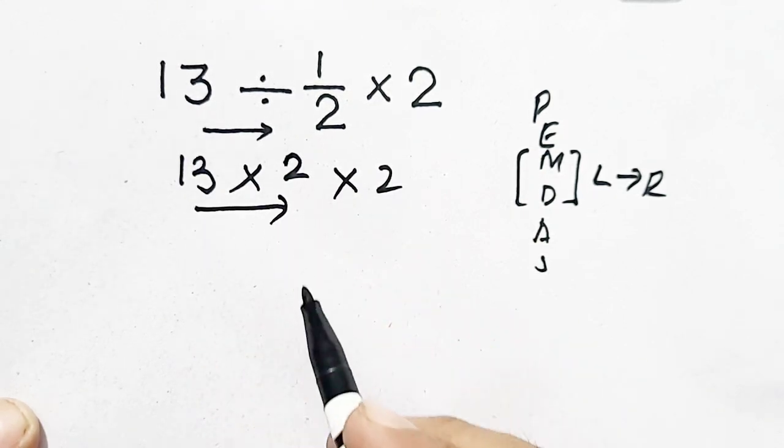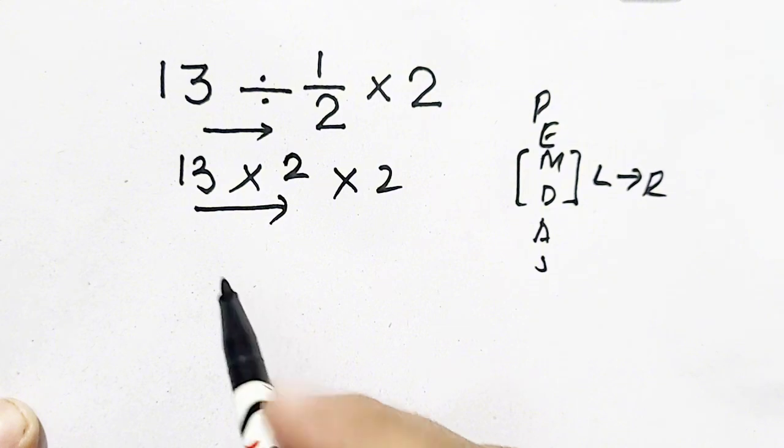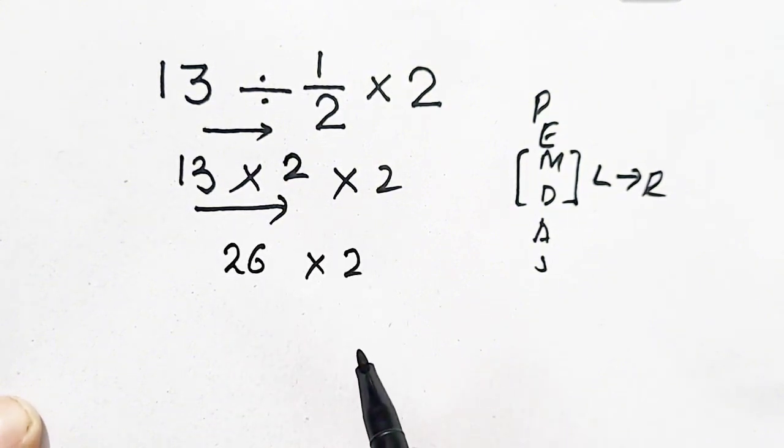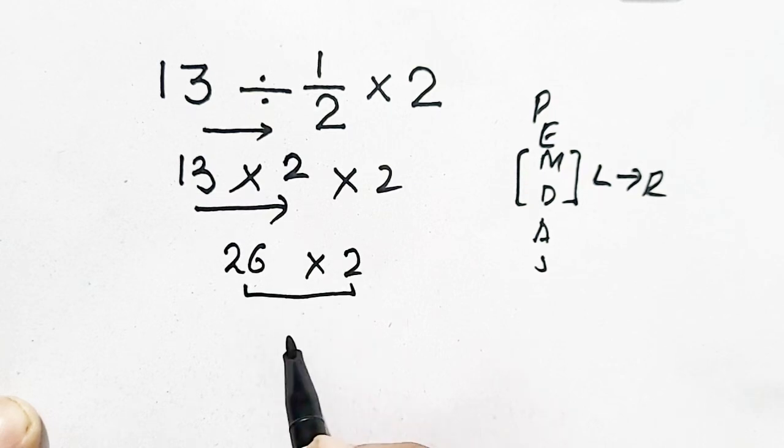Now again, we move from left to right. 13 times 2 equals 26, times 2. 26 times 2 equals 52, which will be our correct answer.